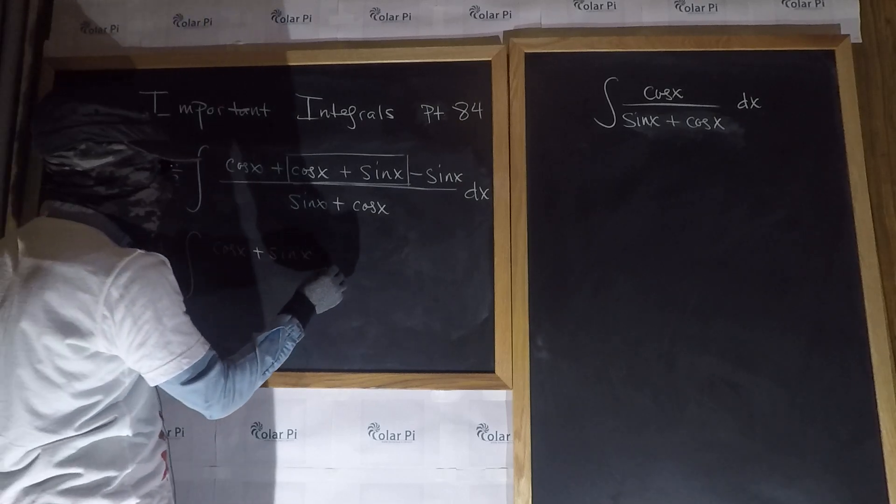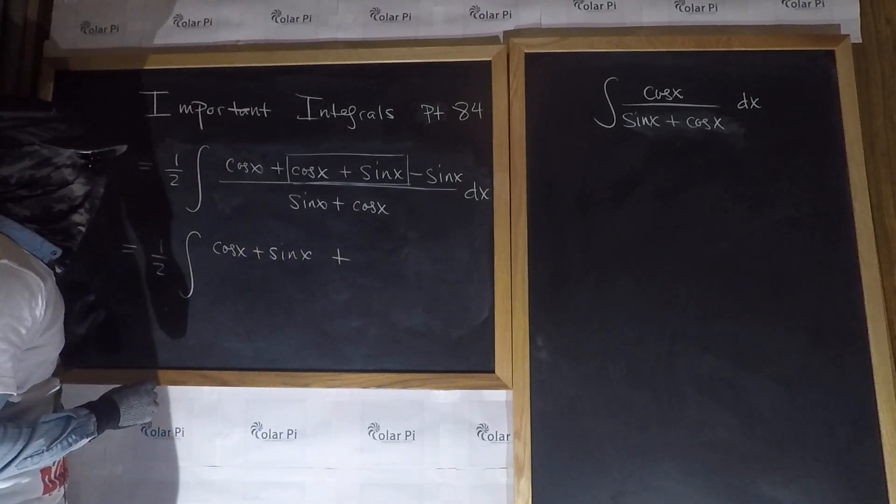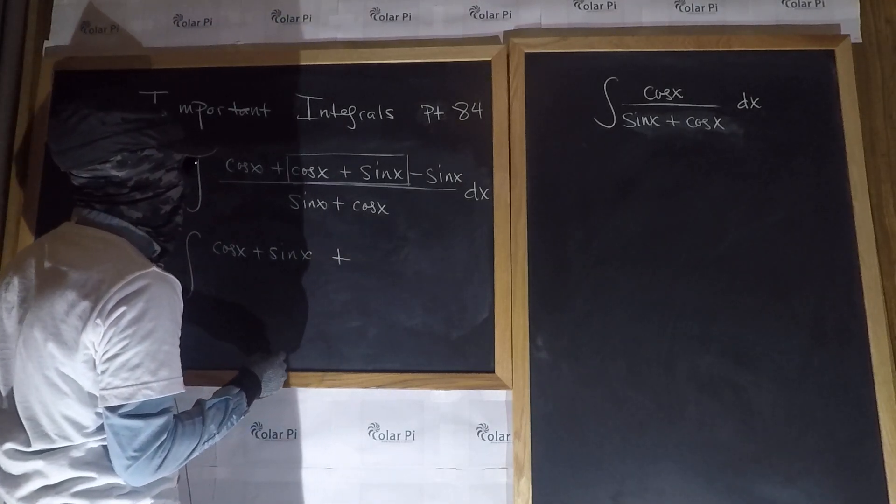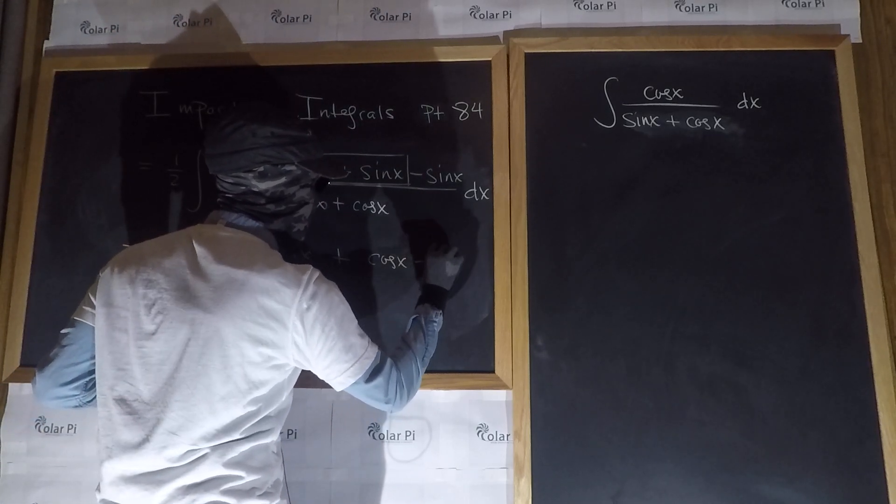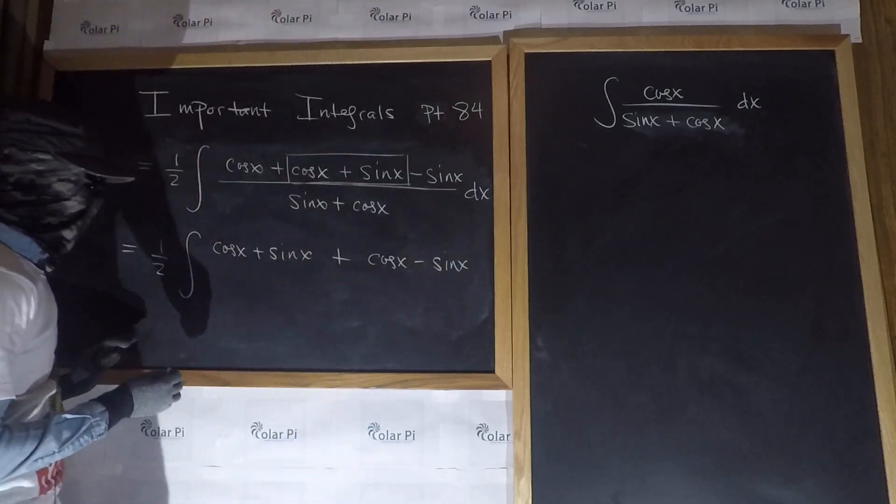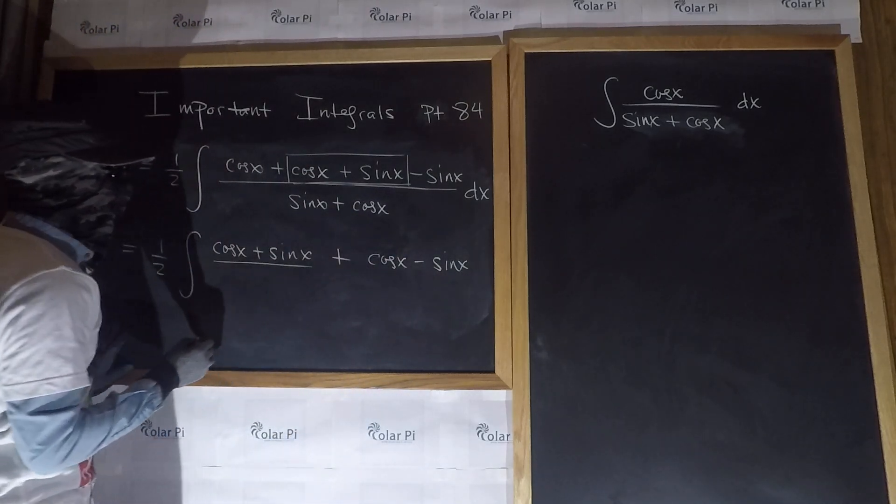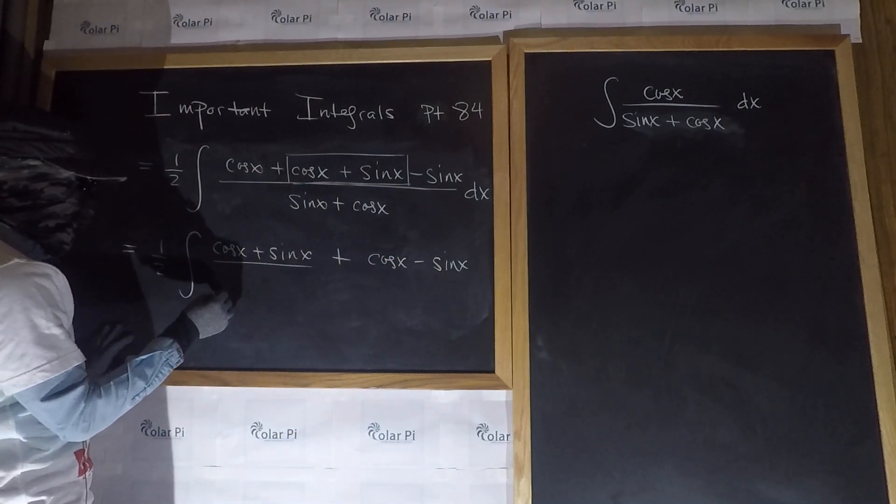And then, plus, and then I want cos x minus sin x, right? And, so this whole thing is divided by sin x plus cos x.